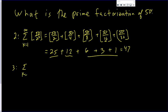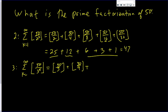Let's look at 3. We take the summation of the greatest integer function of 50 over 3 to the k. That's going to be the greatest integer of 50 over 3, plus 50 over 9, plus 50 over 27. 3 goes into 50 sixteen times, 9 goes into 50 five times, and 27 goes into 50 one time. This turns out to be 22.